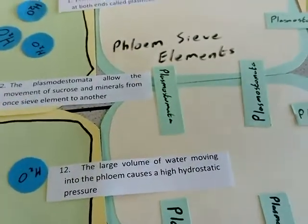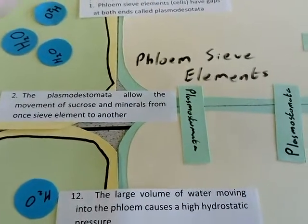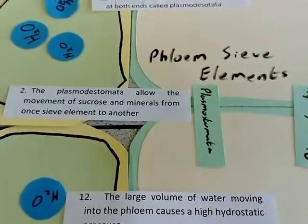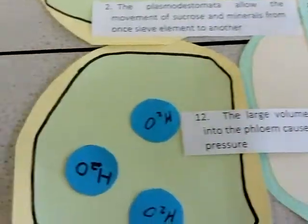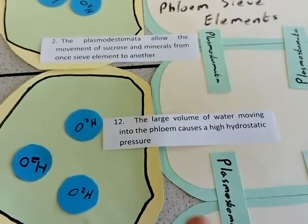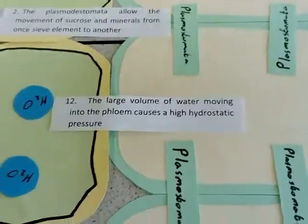We start off with the first thing when you're answering a question that you need to talk about. The phloem sieve elements have gaps at both ends called plasmodesmata. The plasmodesmata allow the movement of sucrose and minerals from one sieve element to another.